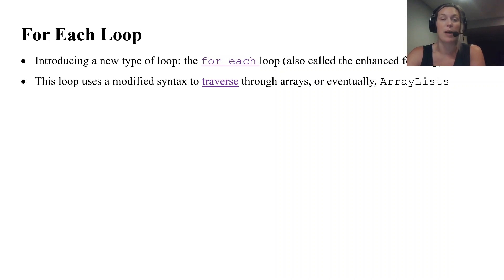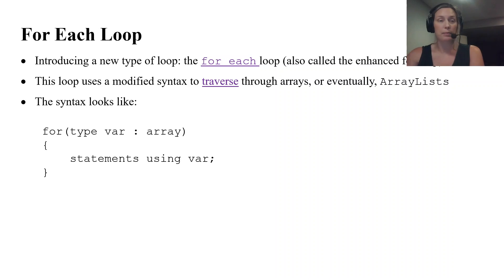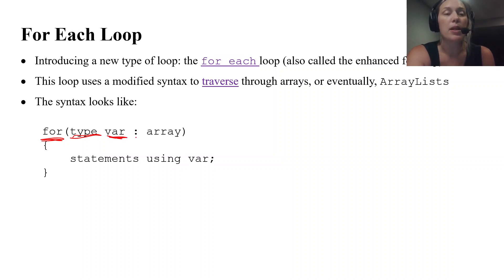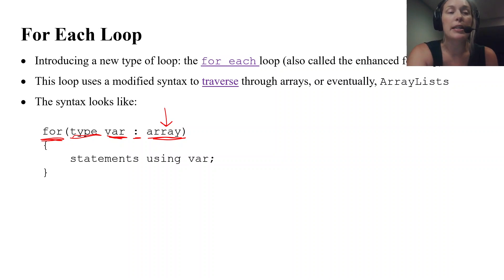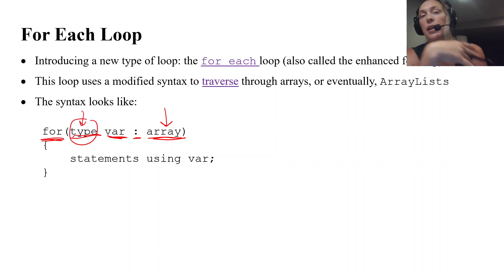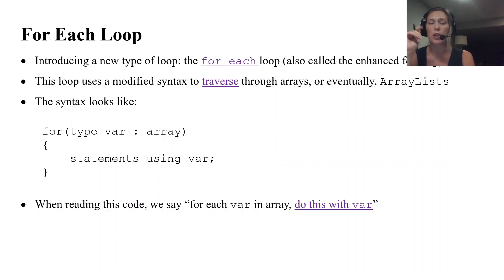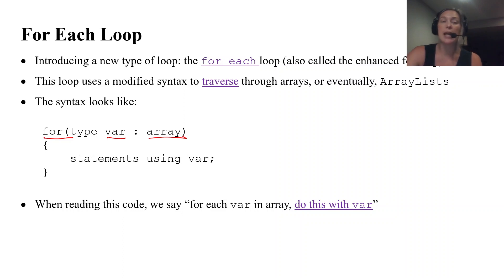We'll also use it a lot with array lists, which we'll talk about in the next unit. This loop is just another way to traverse through arrays. The syntax still starts with our familiar for loop header, but inside the parentheses is something different: we have the type, then a variable name, a colon, and then the array name. The type matches the type stored in the array.